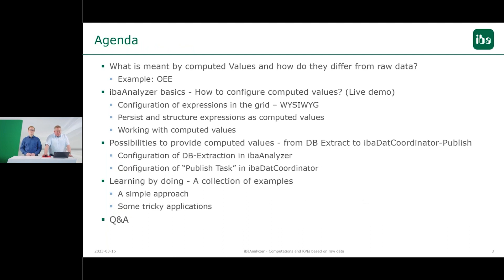The agenda for today: what does it mean by computed values and how do they differ from raw data? There is a short example regarding the OEE KPIs — overall equipment efficiency. Then we will look into IBA analyzer basics, how to configure computed values with a live demo, configuration of examples in the grid. What you see is what you get. Explore data with IBA analyzer — this is a very special feature we have with IBA analyzer in comparison to other tools where you can compute computed values or KPIs.